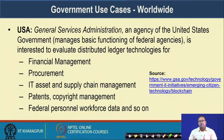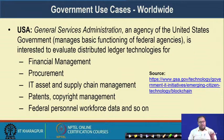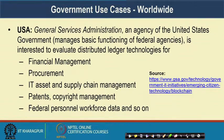In the USA, blockchain has had a big impact. The General Services Administration (GSA), an agency of the United States Government that manages the basic functioning of federal agencies, is interested in evaluating distributed ledger technologies. They have made a call for proposals for suggestions about how blockchain technology can be applied for financial management, procurement, IT asset and supply chain management, patents or copyright management, and federal personnel and workforce data management. This gives you an overall view of how government can utilize the blockchain platform to secure data and ensure access and auditing of information at the government level.